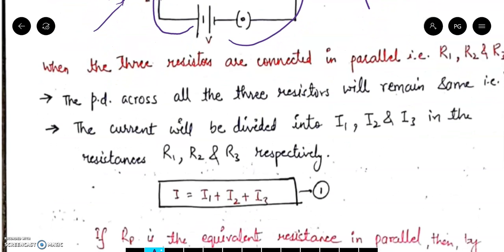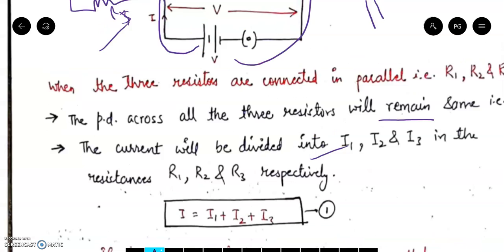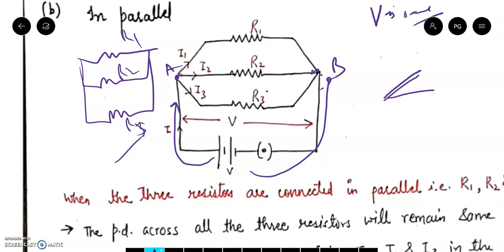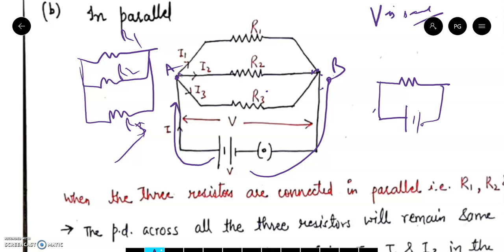When three resistors are connected in parallel, the potential difference across all three resistances remains the same, but the current divides itself into i1, i2, and i3. The net current the circuit provides will divide according to the resistances. The net current i should be equal to i1 plus i2 plus i3, which follows from Kirchhoff's current law.